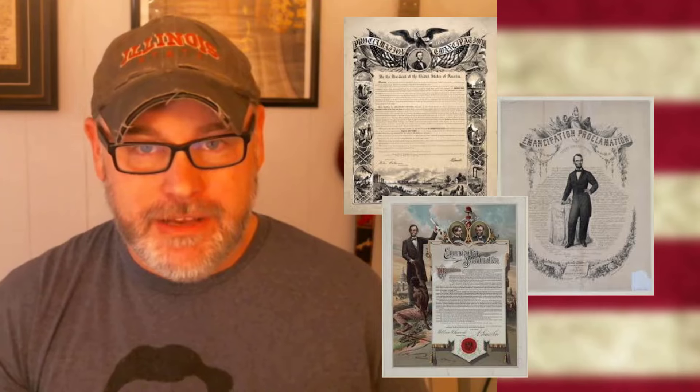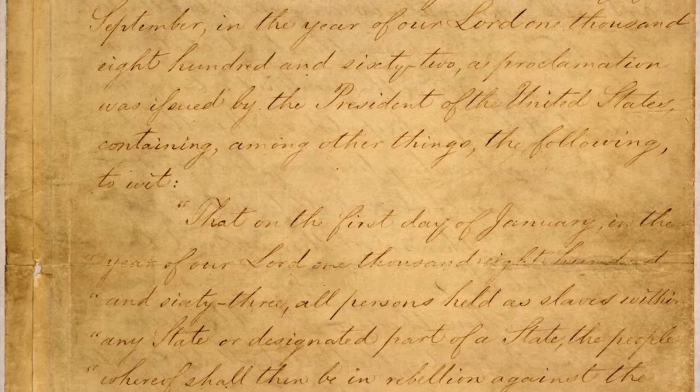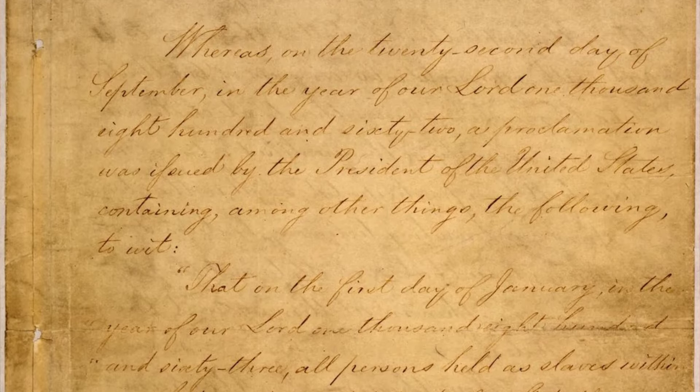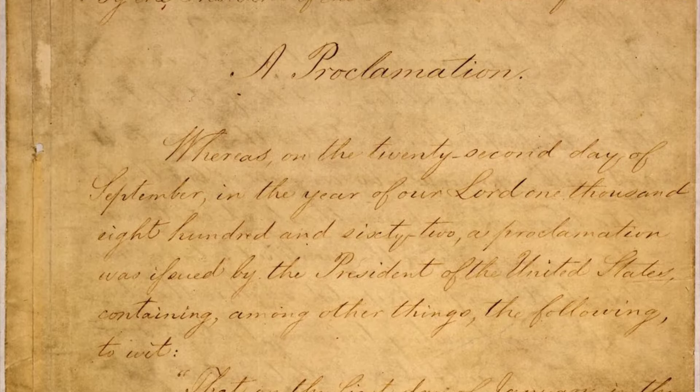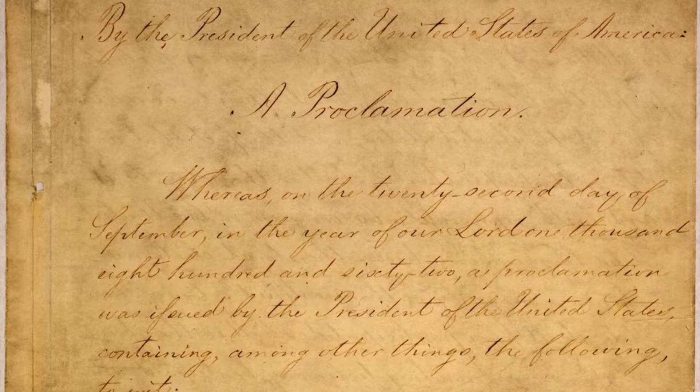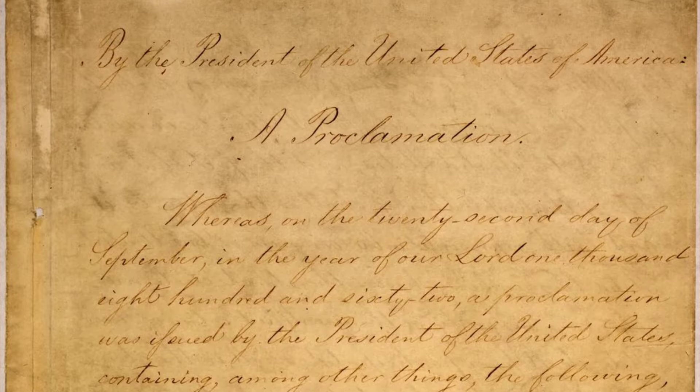As soon as the Proclamation was issued, printers began making collectible prints of the Emancipation Proclamation. Several are on display today in museums, but the original Proclamation, which was a five-page document with a signature page at the end of it, is today kept at the National Archives in Washington, D.C.